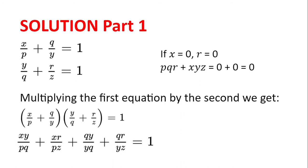We will first go through the cases when some of the letters are equal to 0, because we do not want to be dividing by 0 in the main case. We first notice that P, Y, Q, and Z cannot be 0 because they are denominators of the fractions.